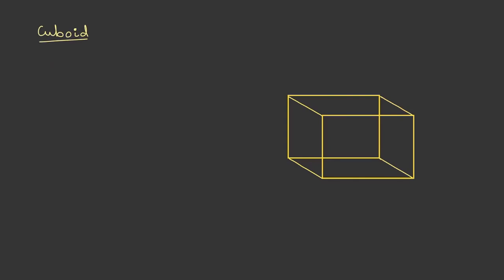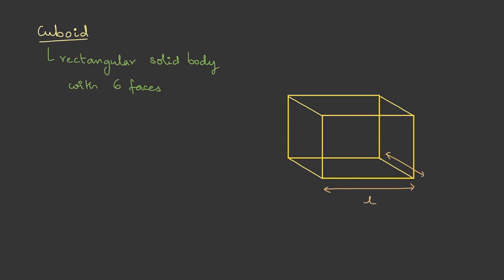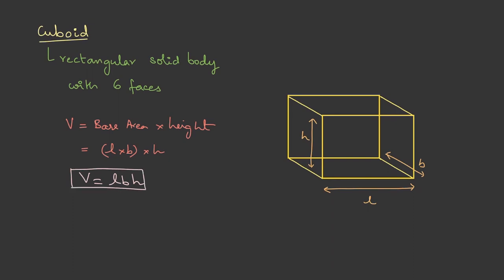Now let's learn about the cuboid. A cuboid can be thought of as an extension of the rectangle — it is a rectangular solid body with six faces. Labeling the edges: this is the length L, this is the breadth B, and this is the height H. Volume is base area into height, so volume equals L × B × H.